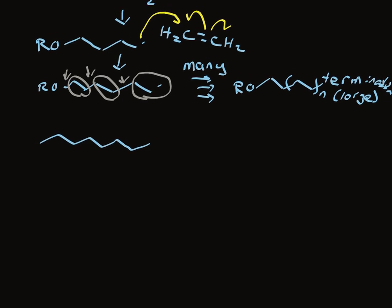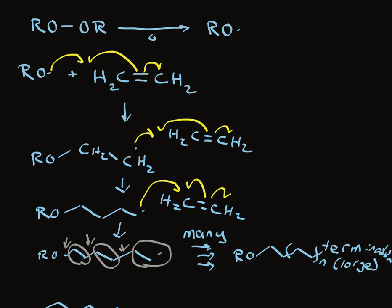Ethylene could have something attached to it and the same chemistry would happen. Let's look at another example. If there were a methyl group here, then there would be a methyl group attached here. I'm going to write ME, and a methyl group attached here and here. Notice each time the addition occurs in a way that would make the more stable secondary radical rather than the primary radical.